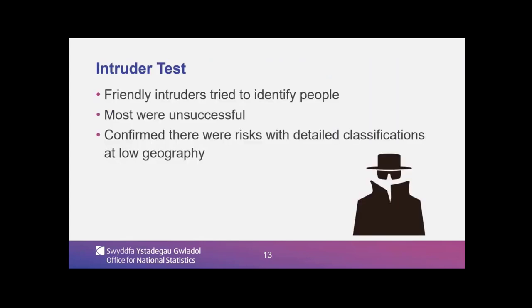After doing all of this, we did wonder whether we'd put enough effort into making this safe. So we did an intruder test. We assembled a team of intruders to check the data and see if they could try to identify people. We had 50 people sign up — 26 took part. Most were unsuccessful. A number did not put in any claims — they tried and tried and the system just said no at the right point. It did confirm there were risks with detailed classifications at low geography. We changed a very small number of outputs in response to that conclusion, because given the experience of my team, we'd already made judgments based upon that assumption, but it was nice to see it borne out by evidence in an empirical study.